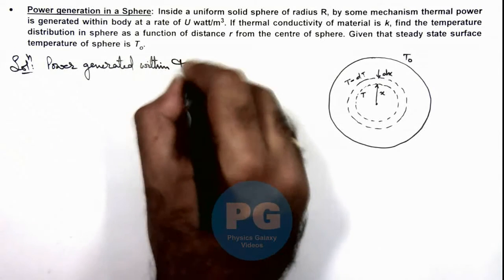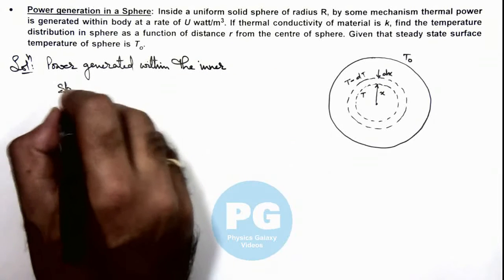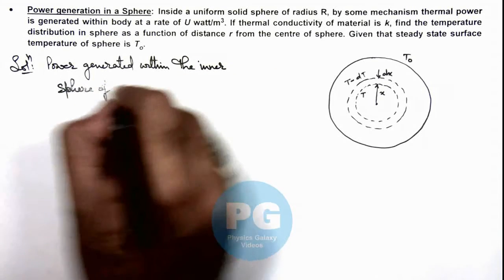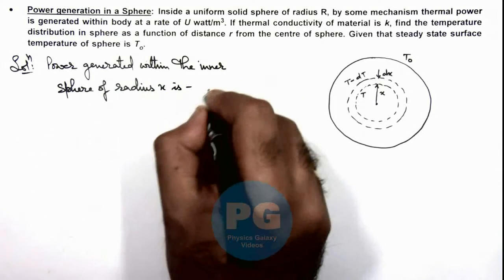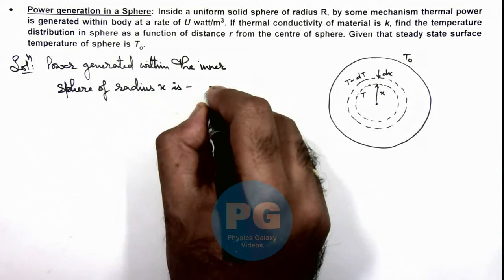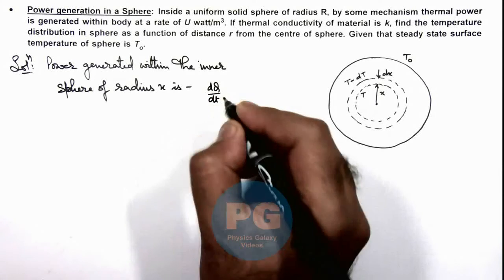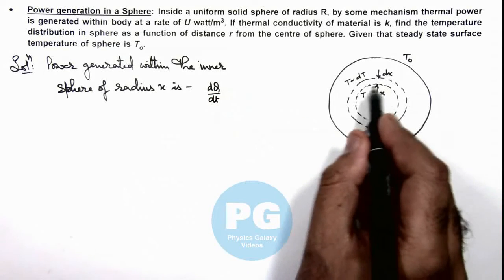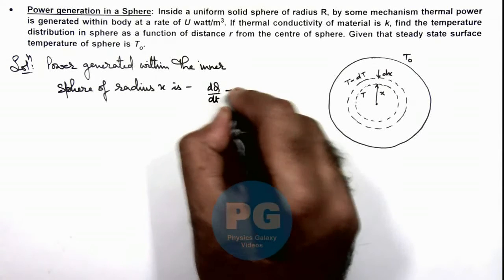Within the inner sphere of radius x, this power produced can be written as dQ/dt, which is the amount of heat which is being produced and that will be conducted through this elemental shell, so this can be written as: